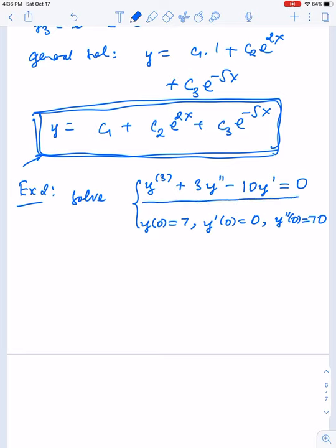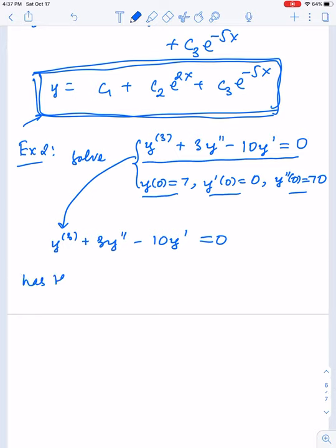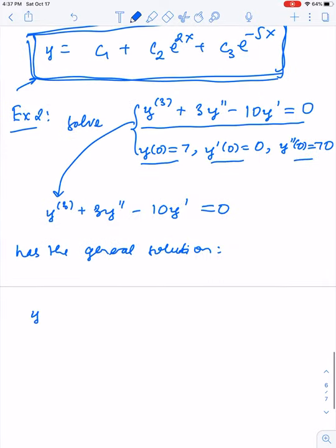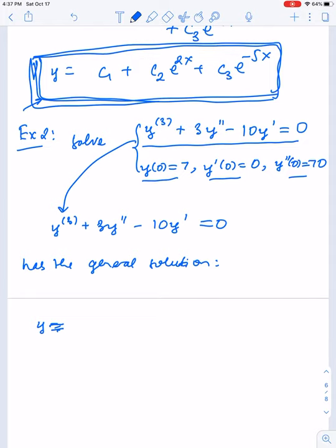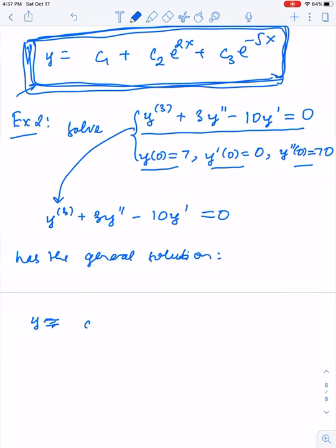Using the previous example, we know that this equation has the general solution y = c1 + c2*e^(2x) + c3*e^(-5x). The general solution was already found in the previous example. Now we need to solve for the initial conditions.